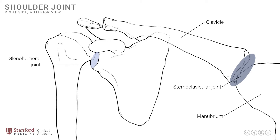The sternoclavicular joint is a strong joint with tremendous capacity for load bearing. The lateral end of the clavicle articulates with the acromion process, forming the acromioclavicular joint. This joint is often dislocated in sports injuries or forceful trauma to the summit of the shoulder — commonly called shoulder separation — which is distinct from a true glenohumeral joint dislocation, also a common clinical injury.